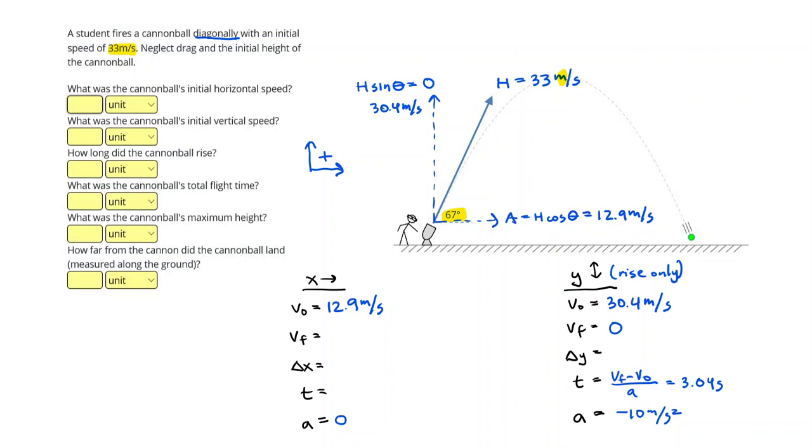I'm going to go ahead and fill out a couple of my answers on the left side. The initial horizontal speed was 12.9, and that's velocity just without the sign. My vertical was 30.4. It's a great idea to check these as you go on positive physics. The cannonball rose for 3.04 seconds.